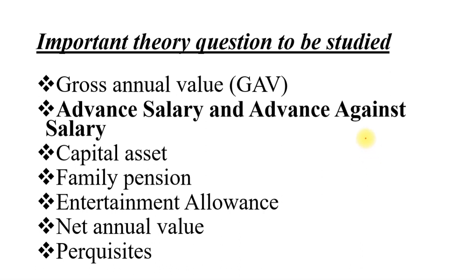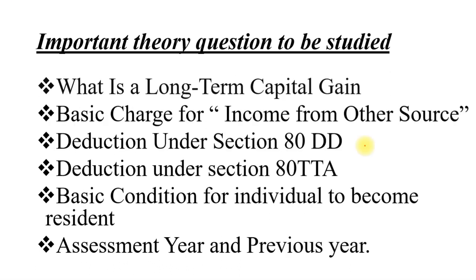Now the last set of questions you need to cover: what is long-term capital gain — here you can explain the various types of capital assets and note down the format showing how to calculate long-term capital gain. Next: what are the basic charges for income from other sources — what are the things that can come under income from other sources. Also: deduction under Section 80DD and deduction under Section 80TDA — remember the limit and what comes under it.